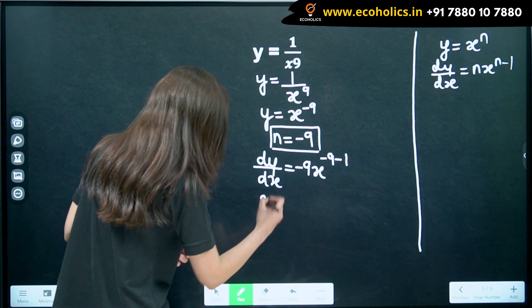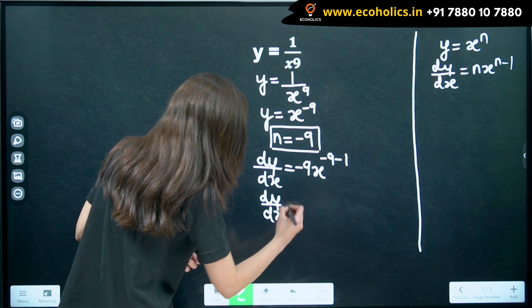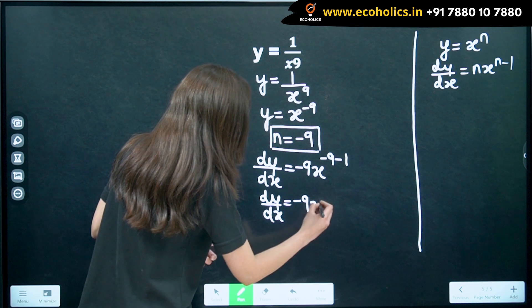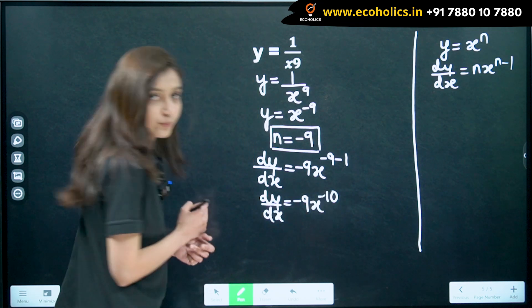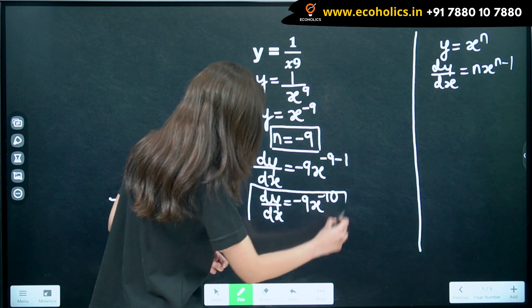So, our dy by dx becomes minus 9 x raised to minus 10. So, this becomes our derivative for this question.